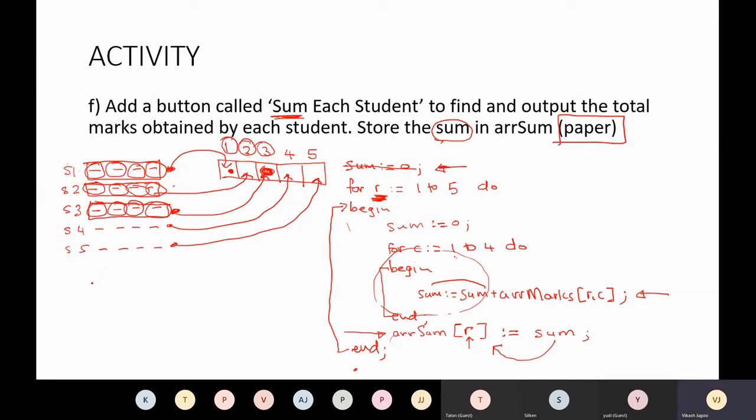R and C. You are going to 1,1, 1,2, 1,3, 1,4, 1,5. That's how the loops are designed.